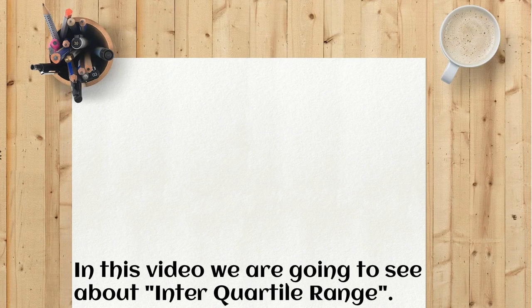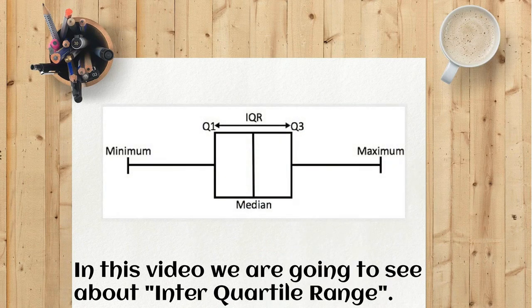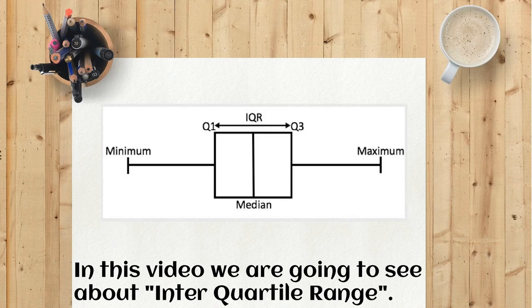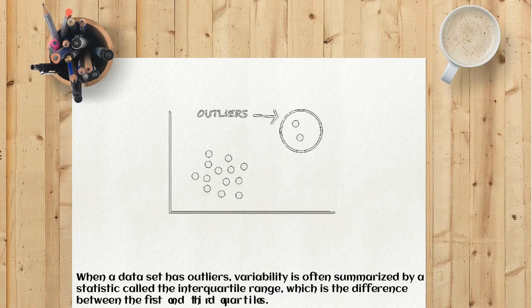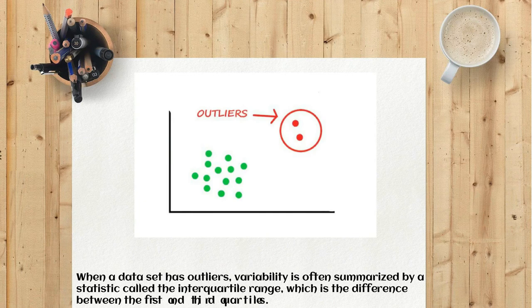In this video, we are going to see about interquartile range. When a data set has outliers, variability is often summarized by a statistic called the interquartile range, which is the difference between the first and third quartiles.